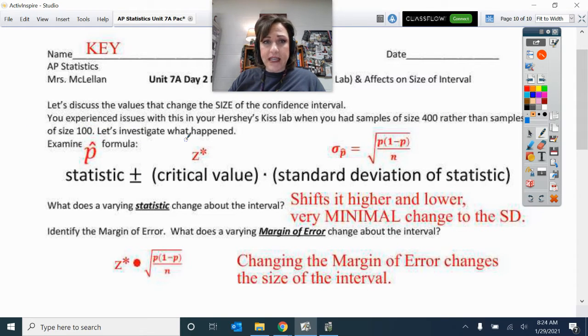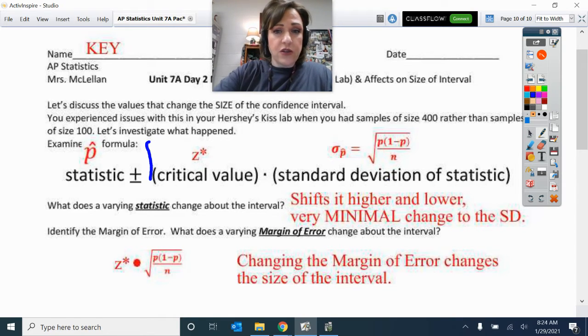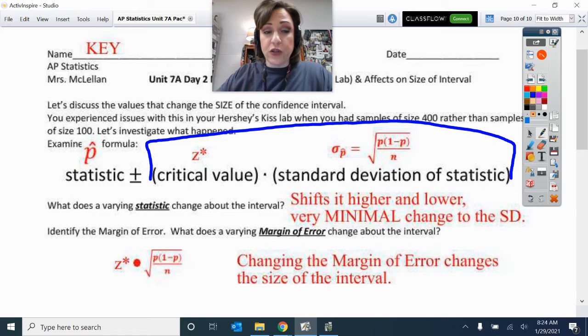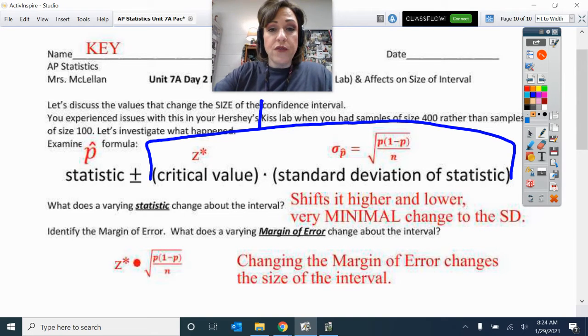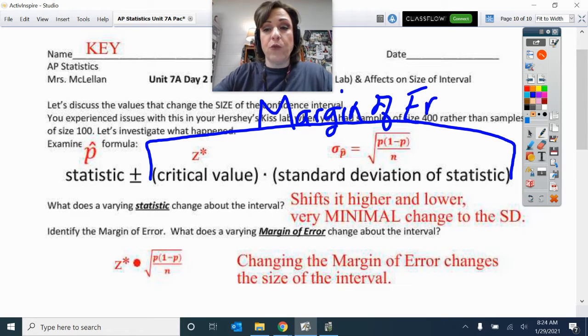Let's look at that formula again. Your P hat, your statistic, plus or minus this critical value times that standard deviation. What are those two things combined? Those two things combined are the margin of error. Big deal that you are able to pinpoint and recognize the part of the formula that is the margin of error.